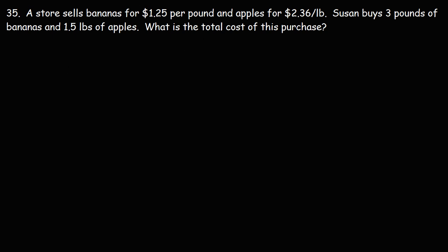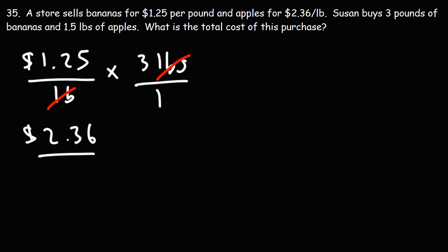Let's first find the cost of bananas. The store sells bananas for $1.25 per pound and she buys 3 pounds of bananas. Let's pay attention to the units. Notice that the unit pounds will cancel and we'll get the total cost for the bananas in dollars. For apples, we're going to do the same thing. The store sells apples for $2.36 per pound and Susan buys 1.5 pounds of apples.